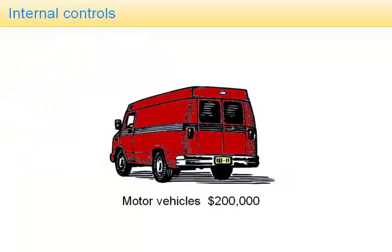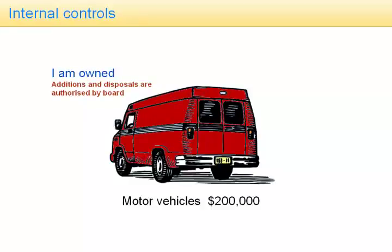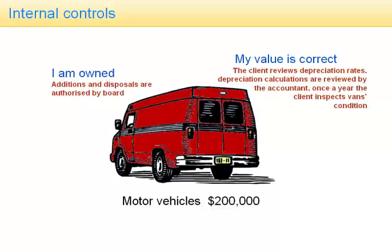Let's look at how some internal controls could be applied to motor vehicles and how they can be used to give evidence that $200,000 is free of material misstatement. The $200,000 is making the assertion that the vehicles are owned — you'd expect new vehicles and disposals to be authorized by the board, or at least by someone in a reasonably senior position. The client needs to carry out internal controls to ensure that the value of the motor vehicles is correct — we would hope to see evidence that the client reviews depreciation rates, re-performs depreciation calculations, and that these are signed off and authorized.